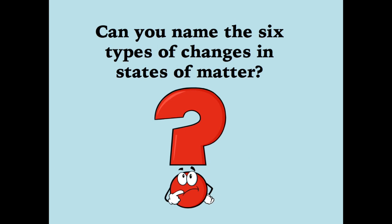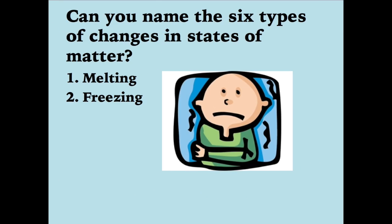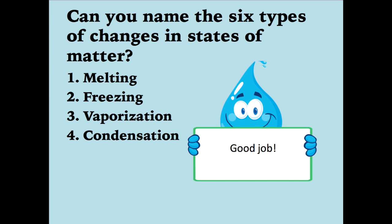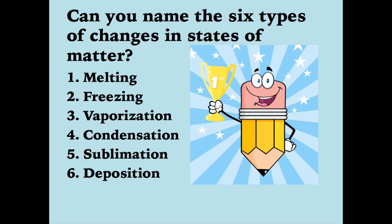Can you name the six types of changes in the states of matter? Melting. Freezing. Vaporization. Condensation. Sublimation. Deposition.